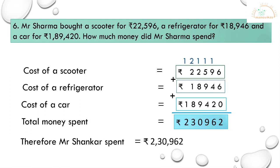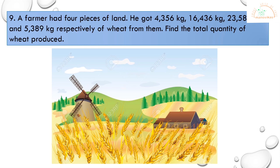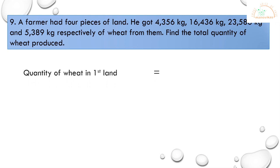Let's solve the ninth problem. A farmer had 4 pieces of land. He got 4,356 kilos, 16,436 kilos, 23,586 kilos, and 5,389 kilos respectively of wheat from them. Find the total quantity of wheat produced. We have to add all four numbers to get the total quantity of wheat produced.